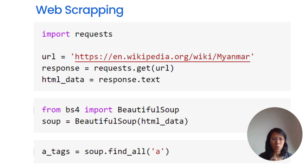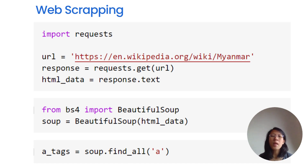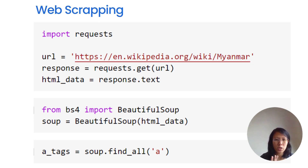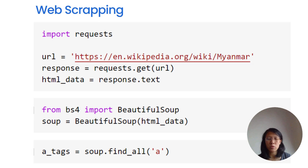For web scraping, the first step is to send a GET request to the URL using the requests library. The response contains the data. You use response.text to get the HTML data, and then the BeautifulSoup library can be used to parse the HTML content.